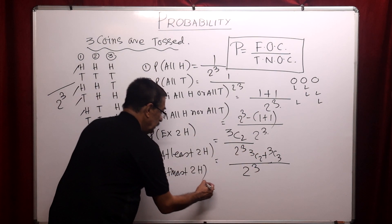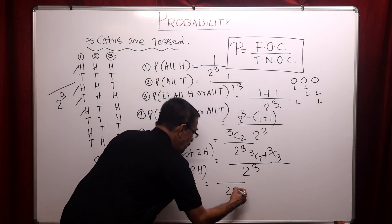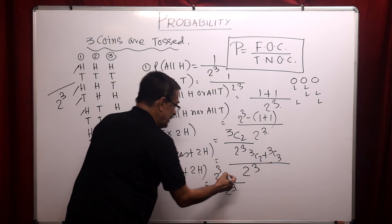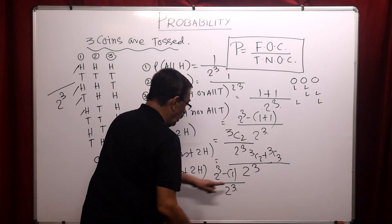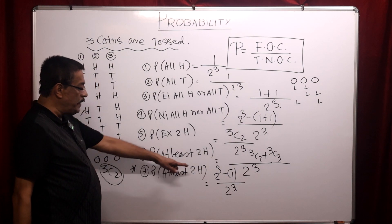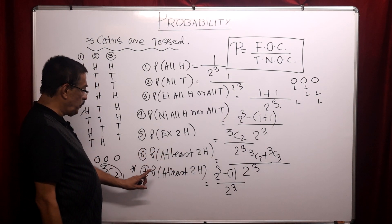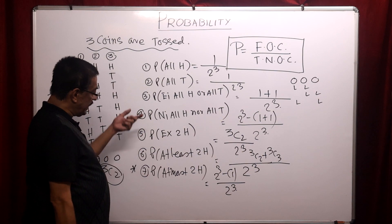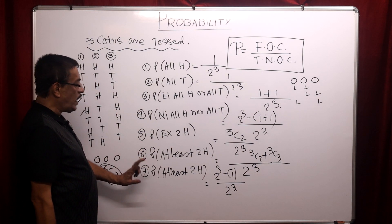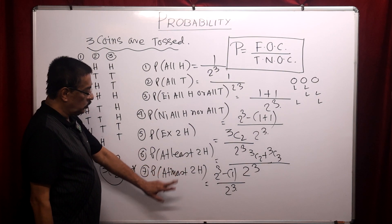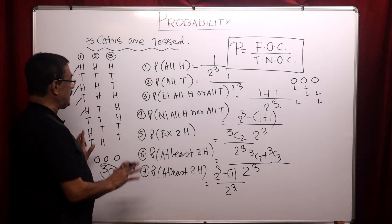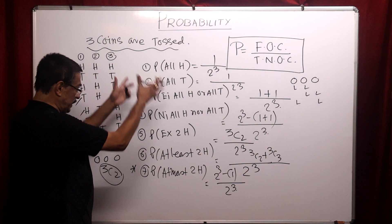For at most two heads: I can consider a maximum of two heads, so I cannot consider three heads — that is only one case. So the answer is two to the power three minus one case not considered. Be very careful about the problem both manually and mathematically.